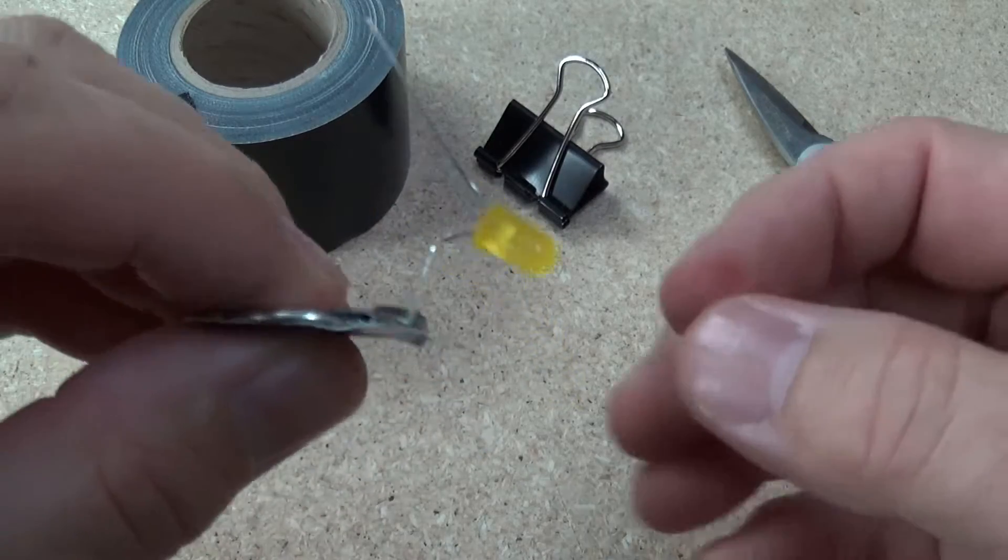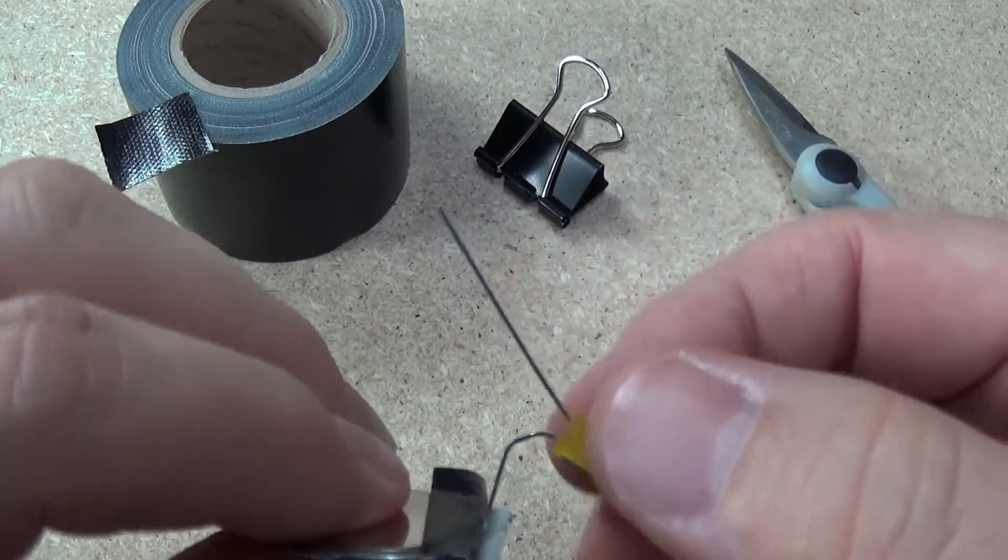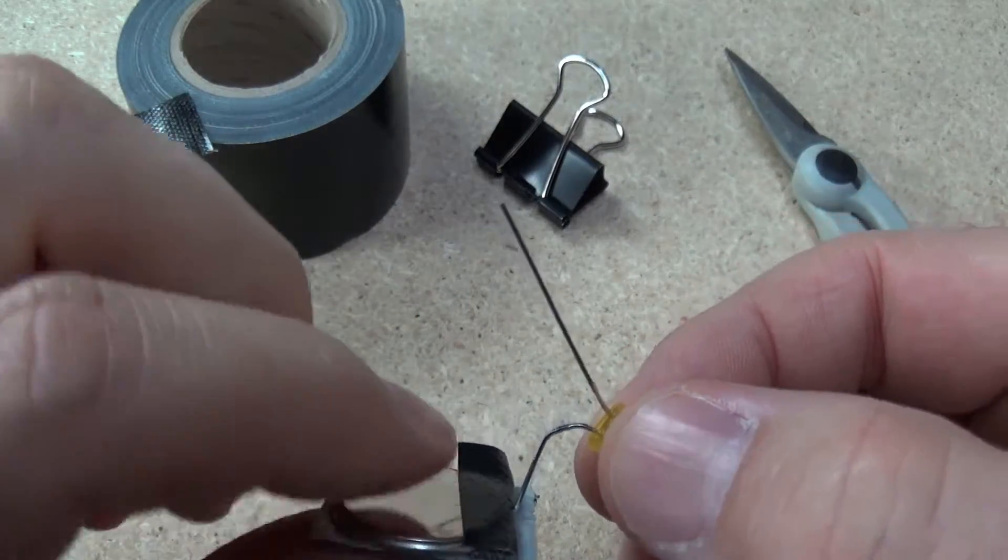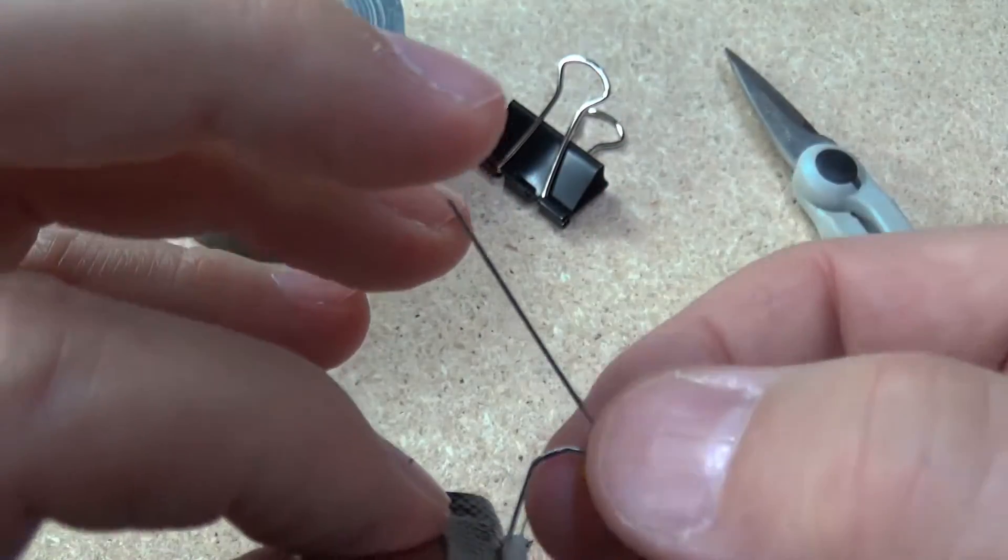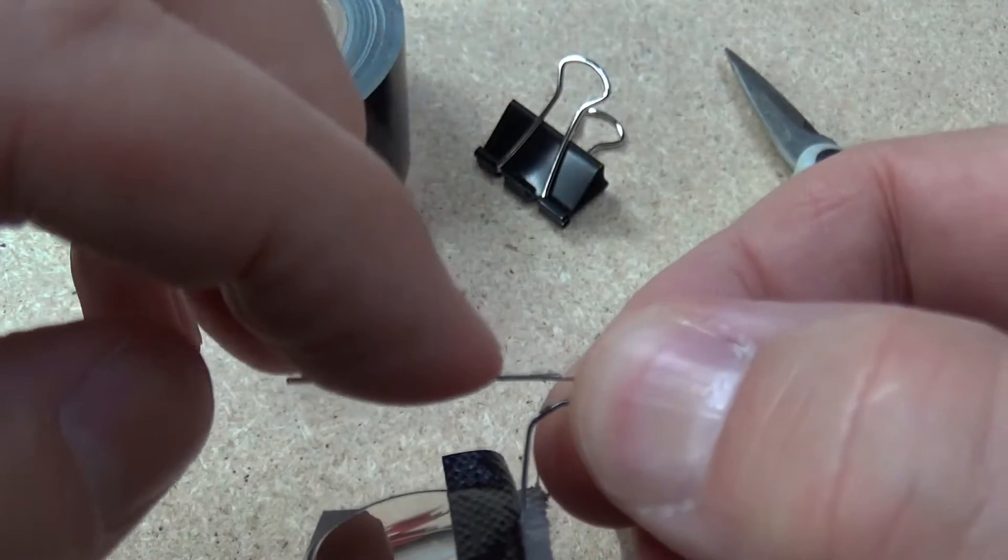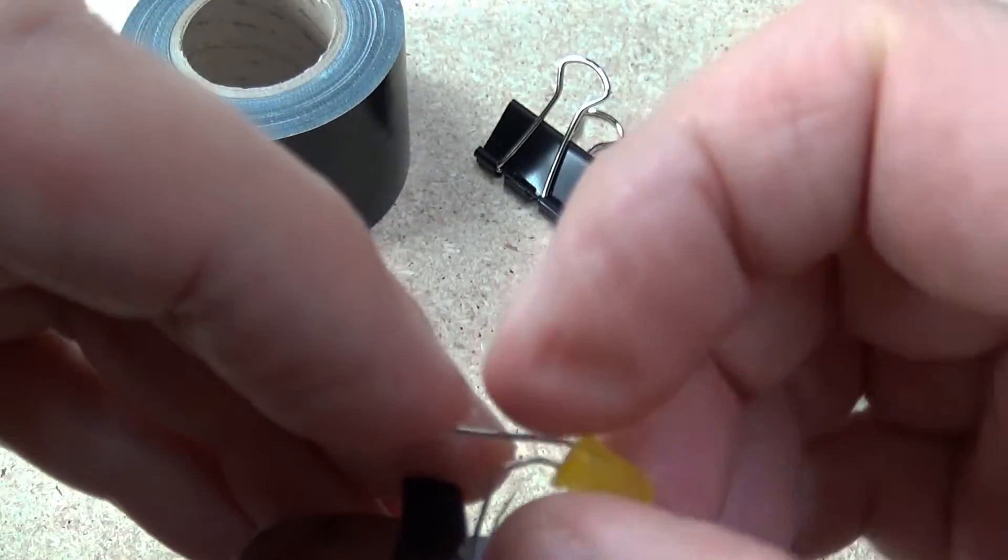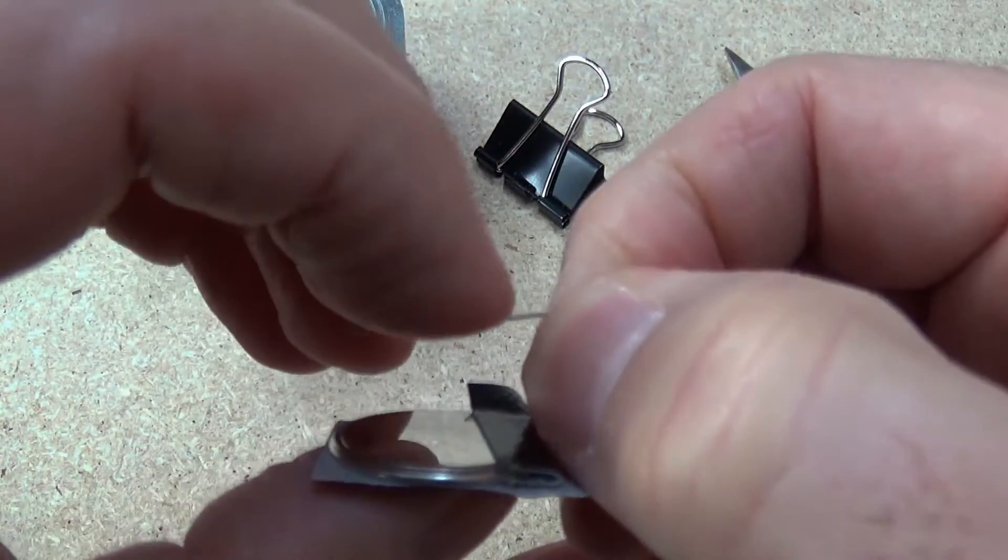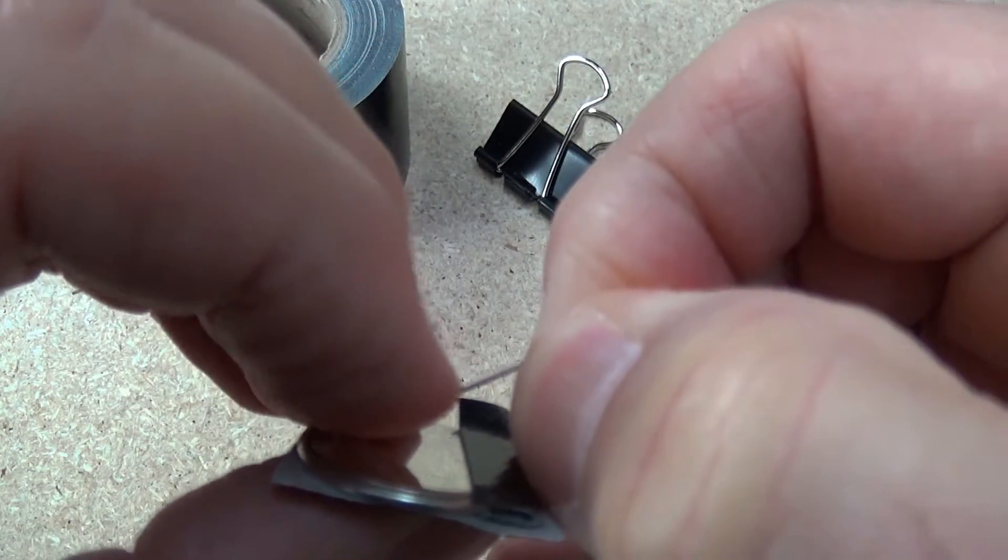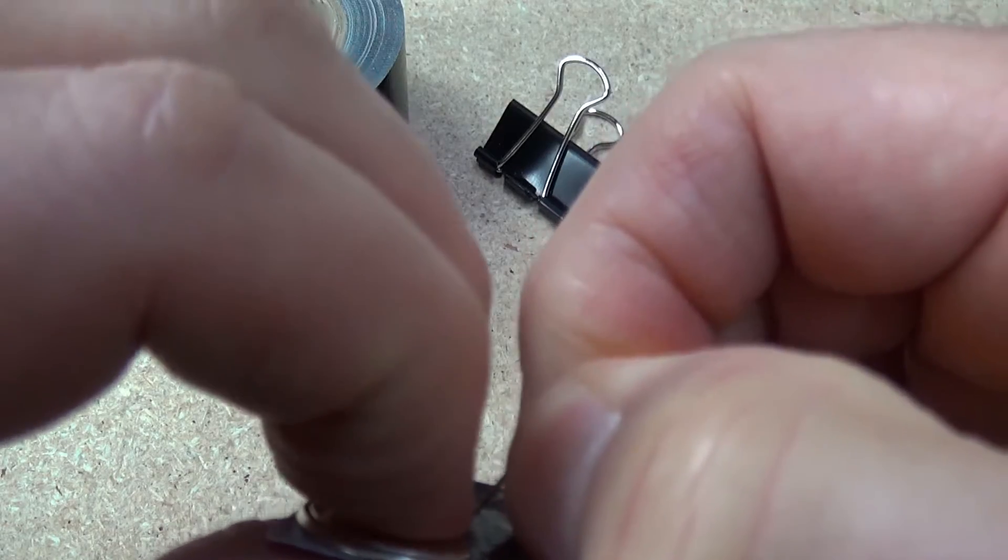So once you have done that you will notice that the negative leg that needs to come down to this part of the battery is sticking up quite tall. You simply want to bend that down without touching the other leg of the LED. Don't let the two legs touch. Bend this down so that it makes contact with the battery and give it a little bit of a squish.